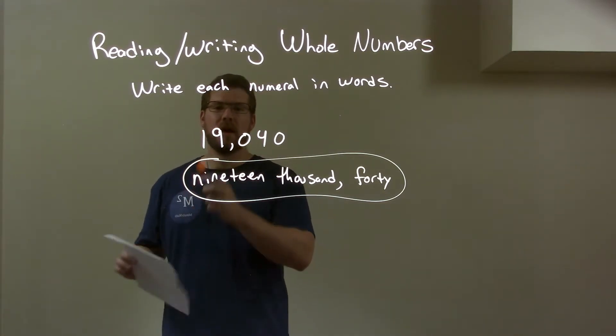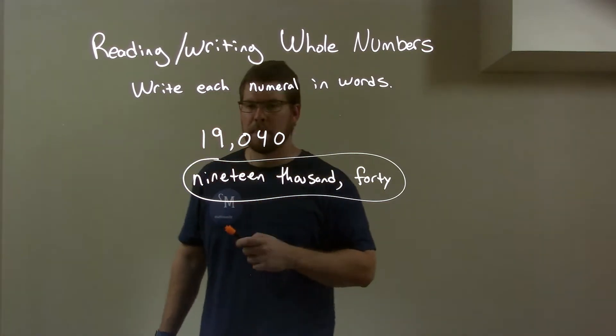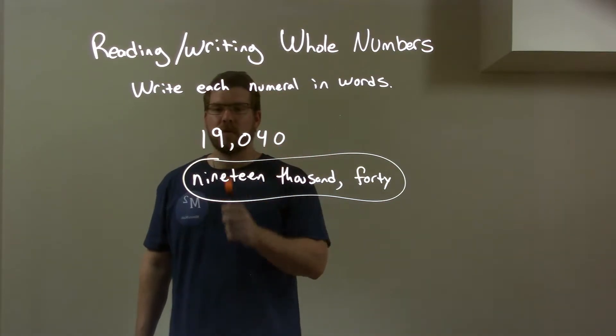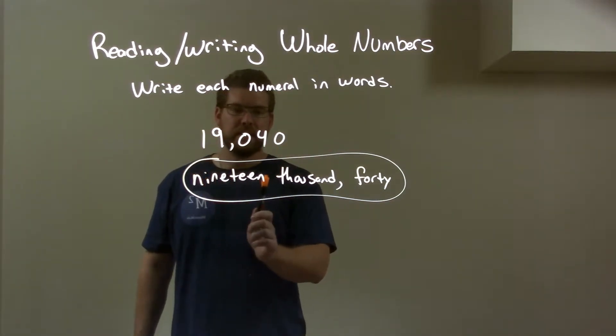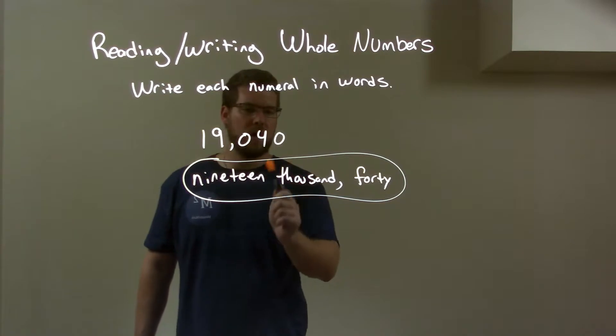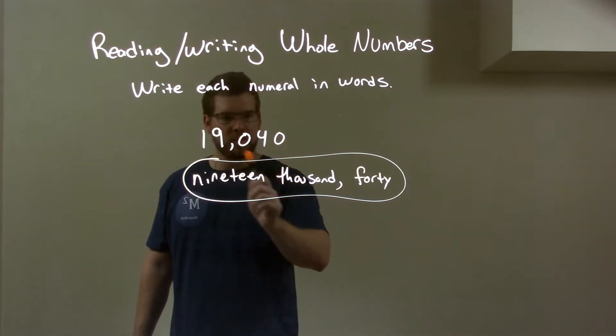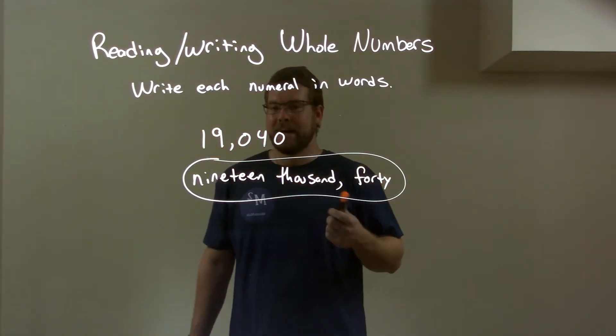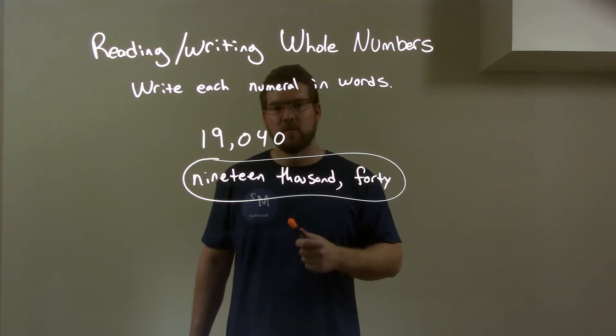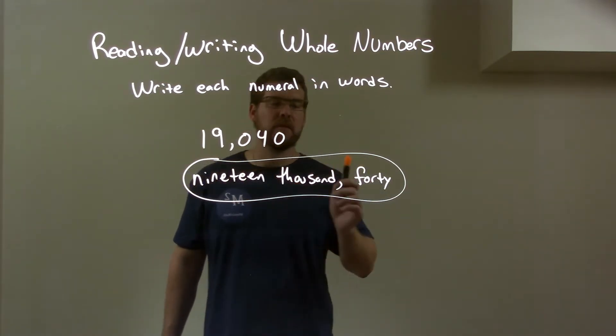So quick recap. We first had one, nine, zero, four, zero, and we're writing it in words. So we have the one nine is nineteen, but it's in the thousandth section, so we have thousand. Then a little comma. And in this section here we have the forty. After that, we're done. And we have our final answer of nineteen thousand forty.